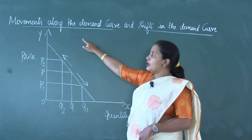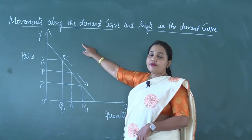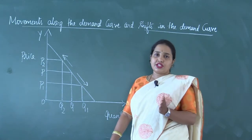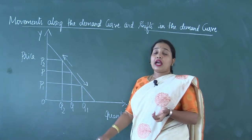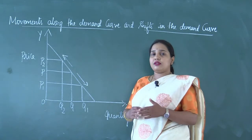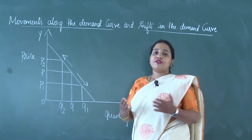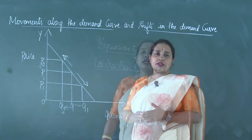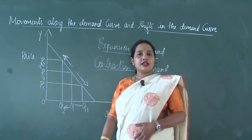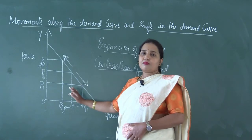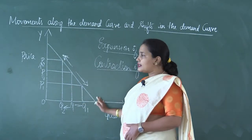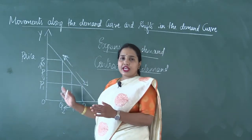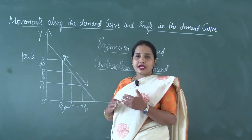Today we are diagrammatically understanding how there will be a movement along the demand curve, especially when we speak about change in demand and change in price, and how there will be a shift in demand when any one of the other determinants of demand changes. Let us understand movement along the demand curve with the help of a diagram. In this particular diagram, you can see that whenever there is a change in price — change in price is to be taken in two ways: increase as well as decrease.